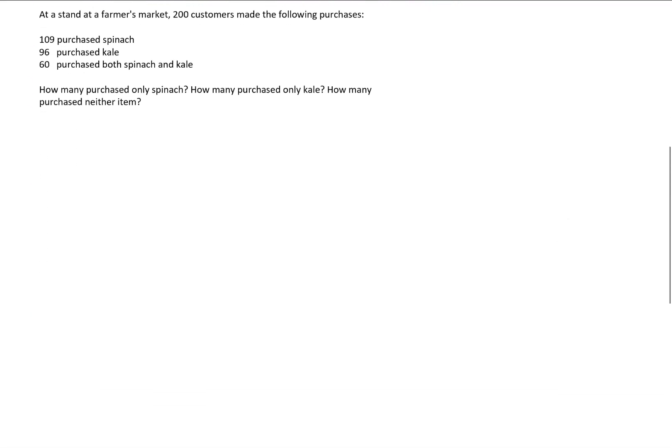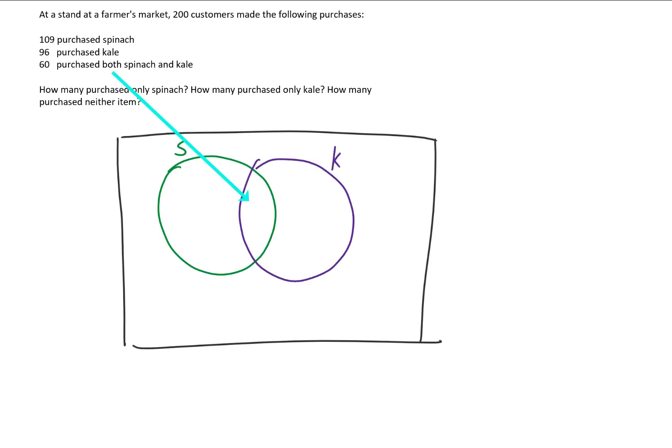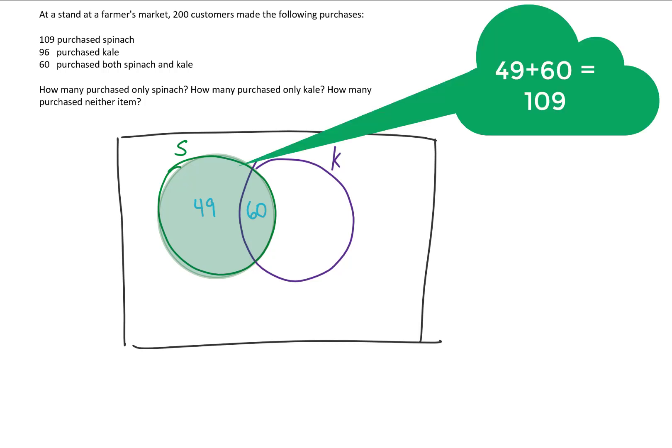Let's take a look at a couple of examples. At a stand at a farmer's market, 200 customers made the following purchases: 109 purchased spinach, 96 purchased kale, and 60 purchased both spinach and kale. For this Venn diagram, we start in the middle with the 60 customers who purchased both. The green circle for spinach should total 109, and since we already have 60, that leaves 49 customers who only purchased spinach.